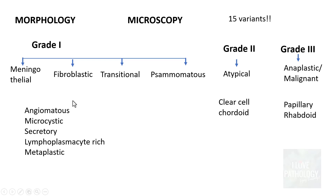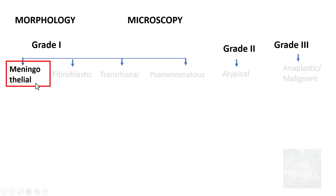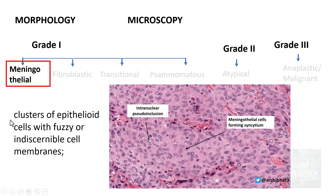The first important variant is the meningothelial type of meningioma. The tumour is composed of clusters of epithelioid cells with fuzzy or indiscernible cell membranes — you cannot easily make out the cell borders. A very characteristic feature is that some of these cells have intranuclear pseudo-inclusions. These meningothelial cells form a syncytium, a sheet-like arrangement, which is classical for this type.